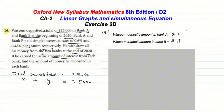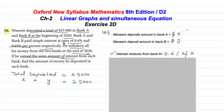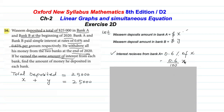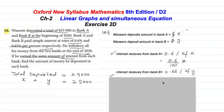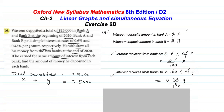For the second equation, Bank A's interest rate and Bank B's interest rate are given and both earning amounts are equal. We will calculate both interest amounts, equalize them, and get the second equation. Then solving first and second equations simultaneously, we will get x and y, i.e., Bank A and Bank B amounts.